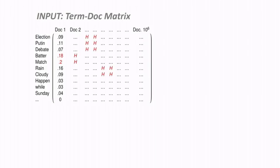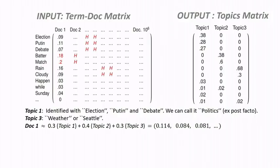What you're given is just the term-document matrix: for ten-to-the-six documents, you get the word count. The word 'election' occurs 9% of the time in the first document, 11% is 'Putin', and so on. What you have to find — and you're not given this — is the matrix with three topics. The topics have weights for words; columns add up to one. Post-facto, after finding them, you can name them: politics, weather, etc.